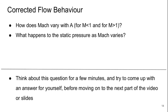So let's think a little bit about the behavior of this corrected flow function. So how does the Mach number vary with A, both for the subsonic, Mach less than one, and supersonic, Mach greater than one, regimes? And what happens to the static pressure as the Mach number varies? So think about these questions for a few minutes and try to come up with an answer or answers for yourself before moving on to the next part of the video.